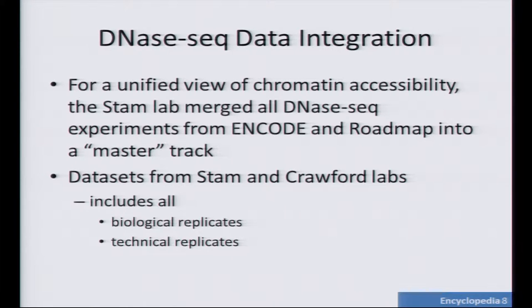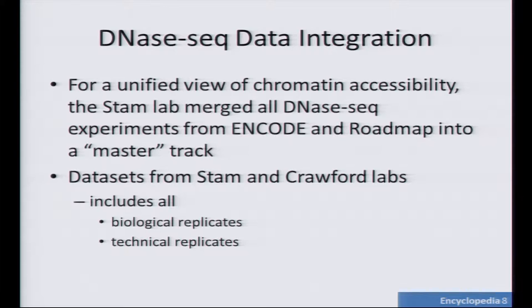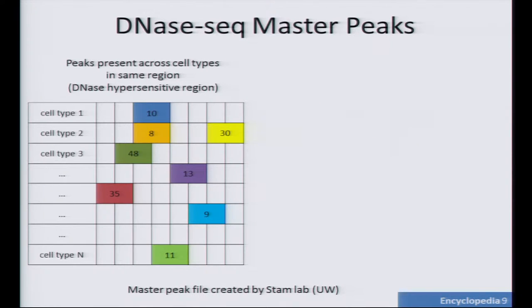To start with, we had the STAM lab take all the DNase-seq experiments available from ENCODE and Roadmap and merge them together. This gives us a unified view of chromatin accessibility across all the cell types we have. This includes all the STAM and Crawford DNase datasets and all the biological and technical replicates. But we didn't just do a bedtools merge on all these datasets — we did something a little bit different. We take the DNase datasets and look at a region where all the peaks overlap.